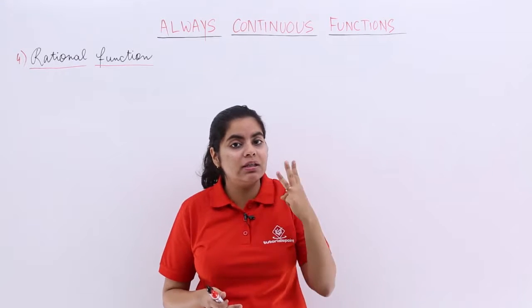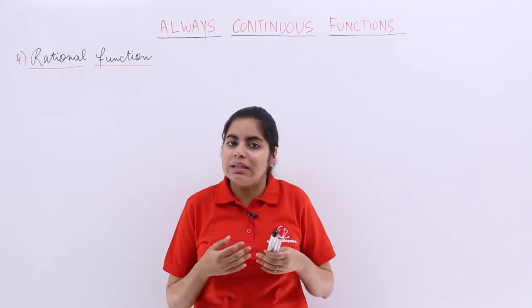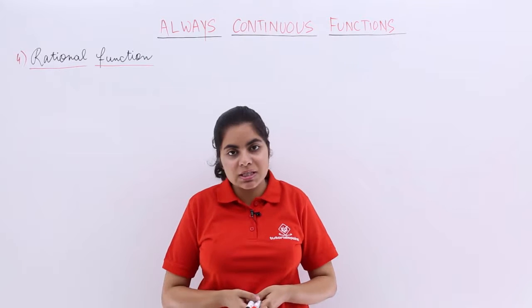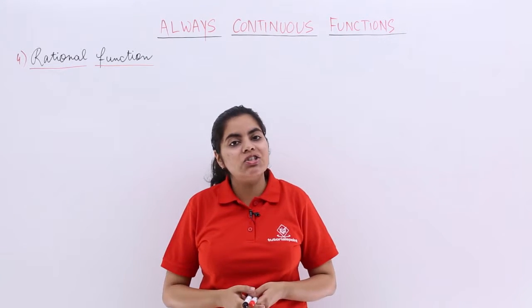And the third one we talked about was polynomial function. So after these three always continuous or everywhere continuous functions, we have the fourth one, which is called a rational function.